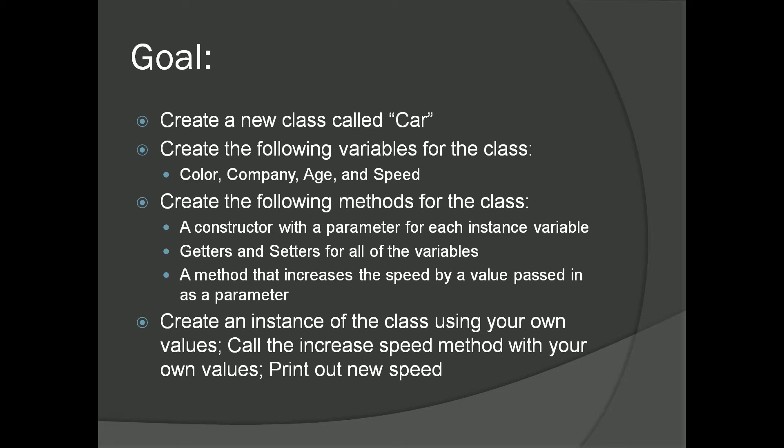Next, create an instance of the class using your own personal values. Call the increase speed method with also your own chosen values. Then, finally, print out the new speed.